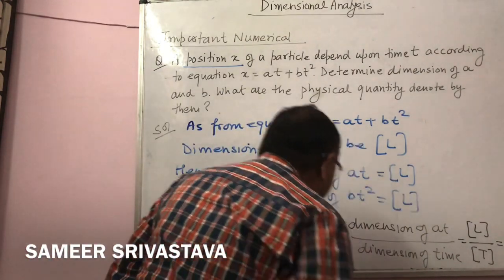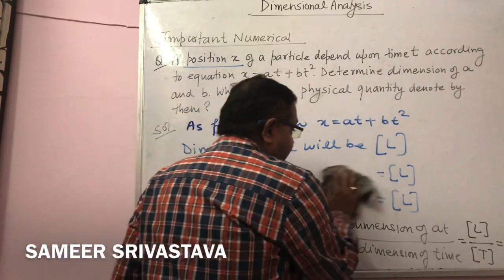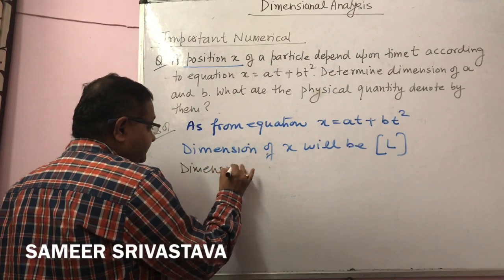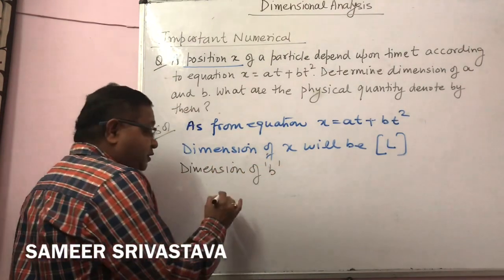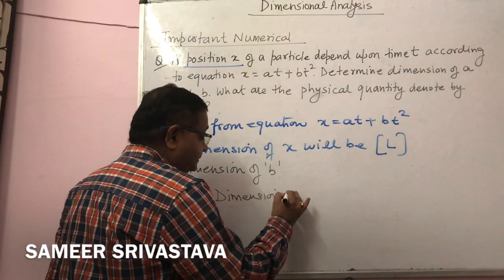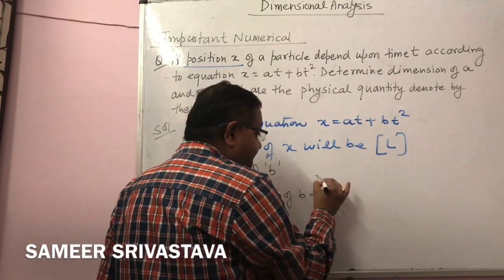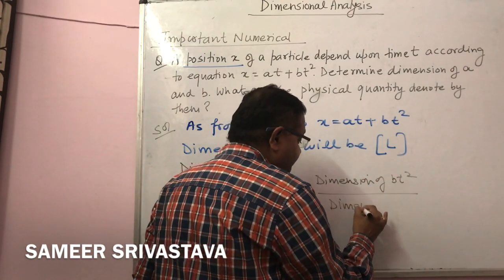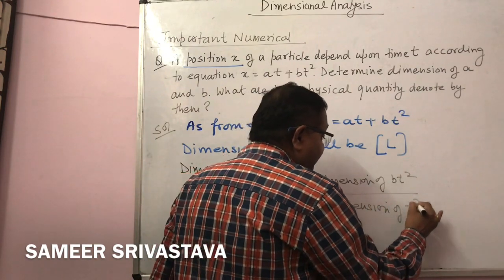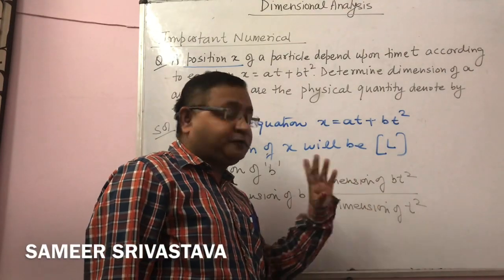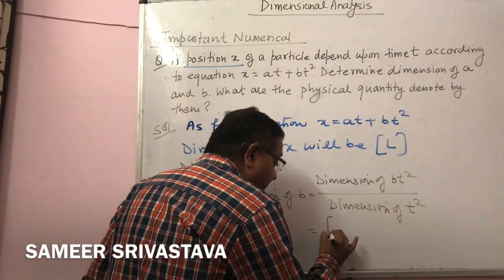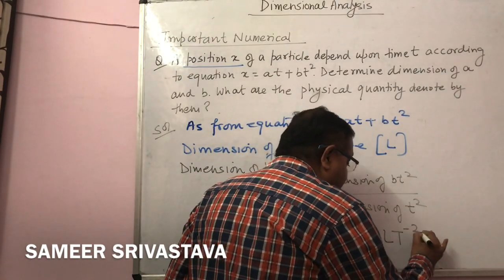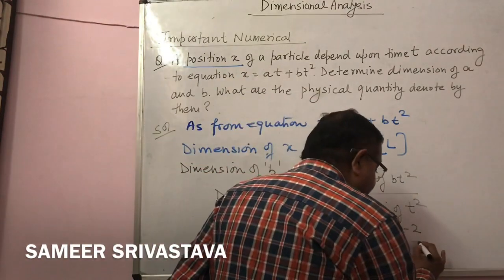Now for the dimension of b: dimension of b = dimension of (bt²) divided by dimension of t². Dimension of bt² is L, and dimension of t² is T². So the result is LT⁻². The physical quantity represented by LT⁻² is acceleration.